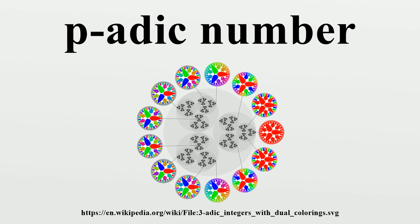The p in p-adic is a variable and may be replaced with a prime or another placeholder variable. The suffix '-adic' in p-adic comes from the ending found in words such as dyadic or triadic, and the p means a prime number.